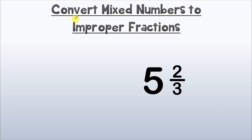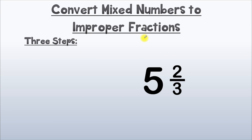Here's our first example. We've got our mixed number 5 and 2 thirds, and we're going to convert this mixed number to an improper fraction. We're going to use three steps to make sure we do that successfully.